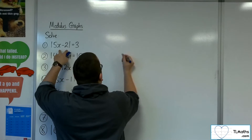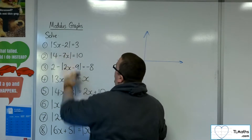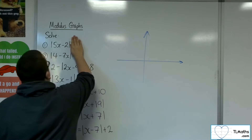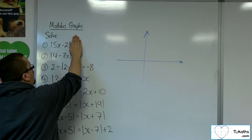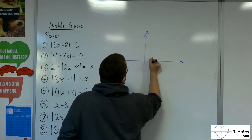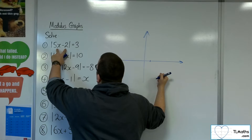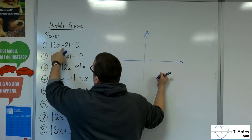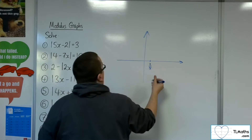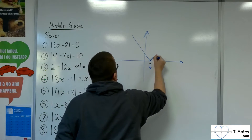For this one, the situation will look like this. We've got mod of 5x minus 2. If we think of y equals mod of 5x minus 2, it's going to be going through 2 fifths on the x-axis, because when x is 2 fifths the expression equals 0. So that's where it sits on the x-axis, and it's going to have this V-shape.